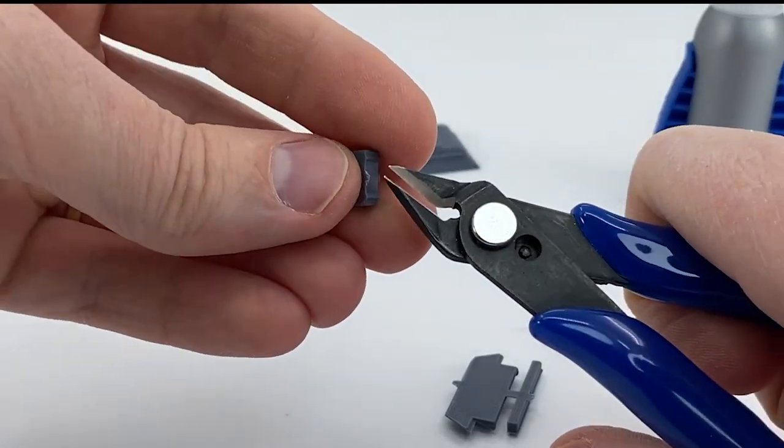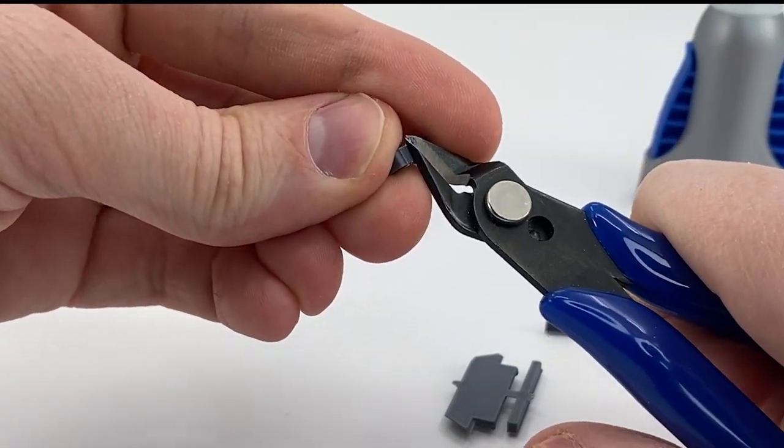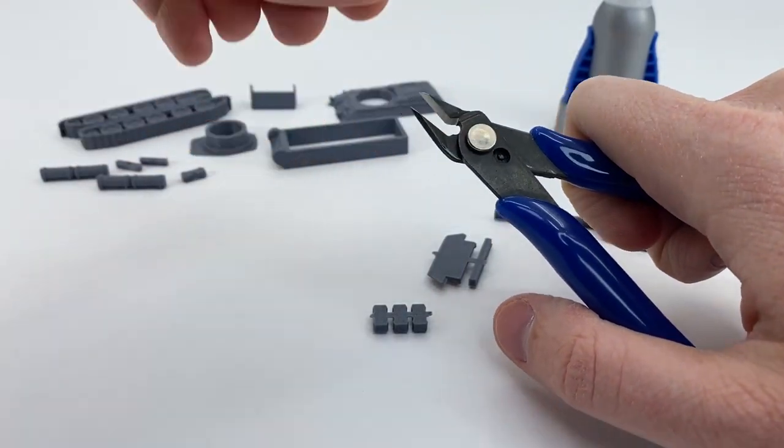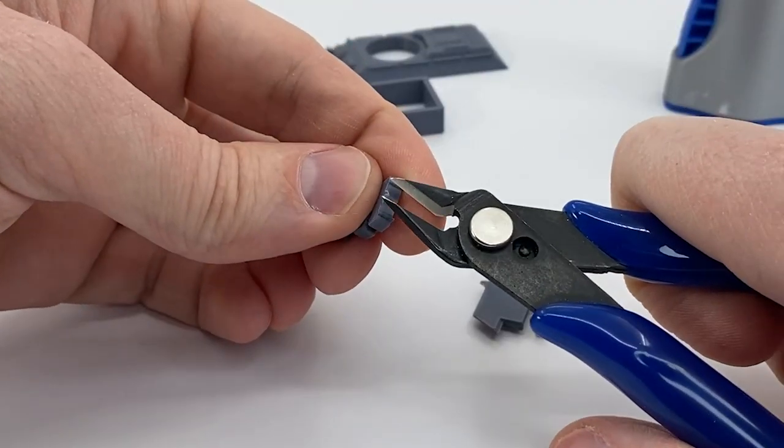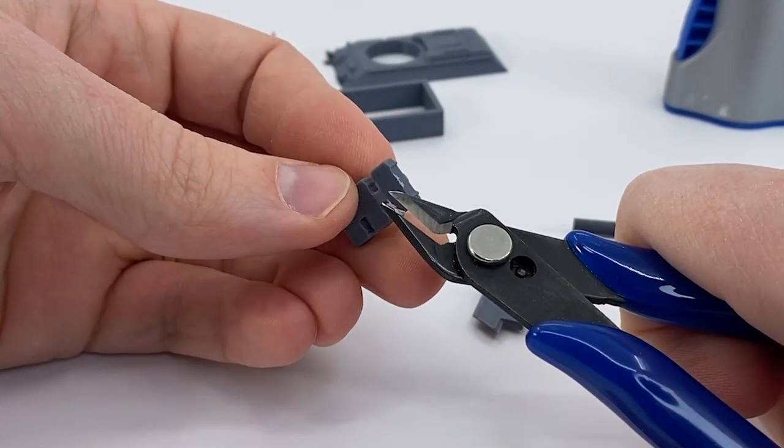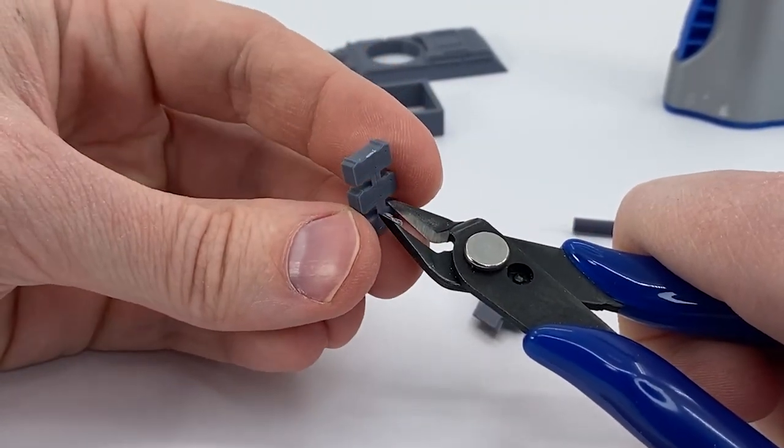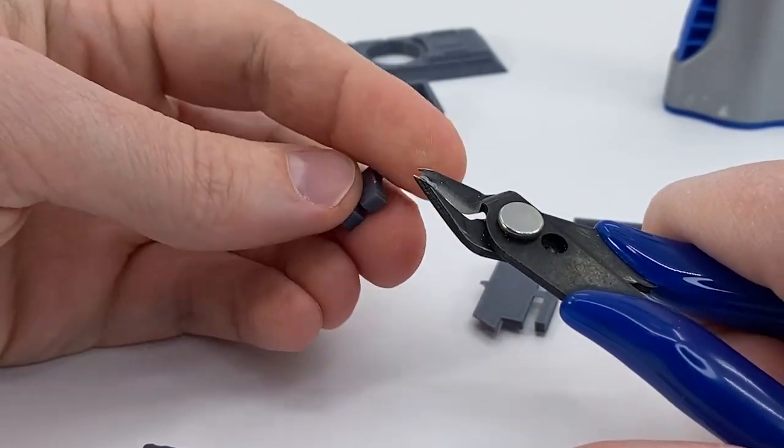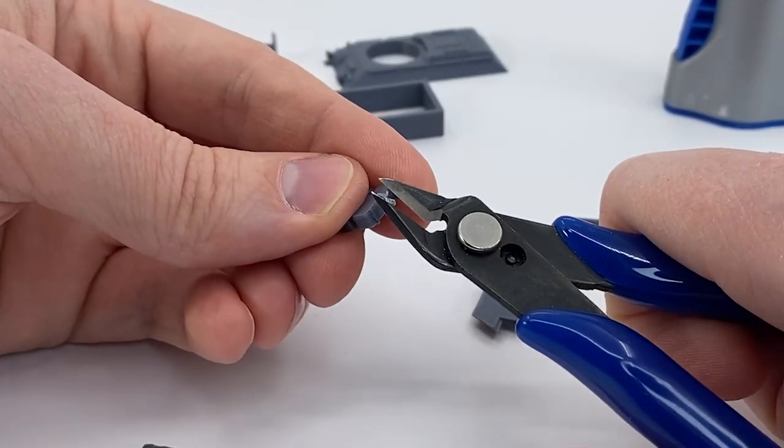All right here's more cargo bins. There you go. Just clean up these sprue marks. Cut. Cut up the sprues and clean them up. You can sand them down too if you wish.